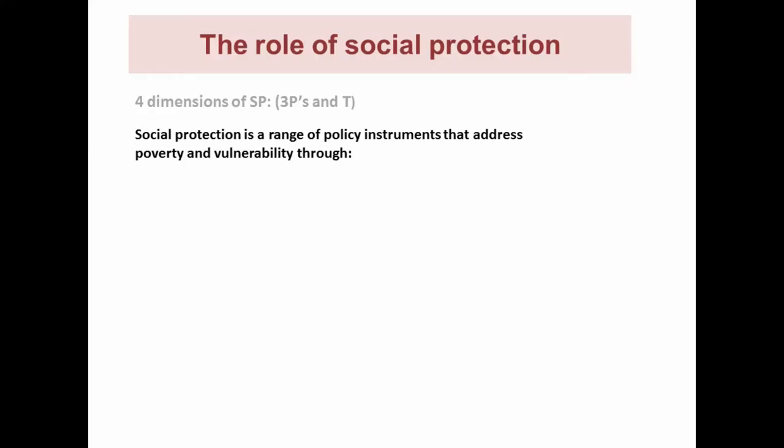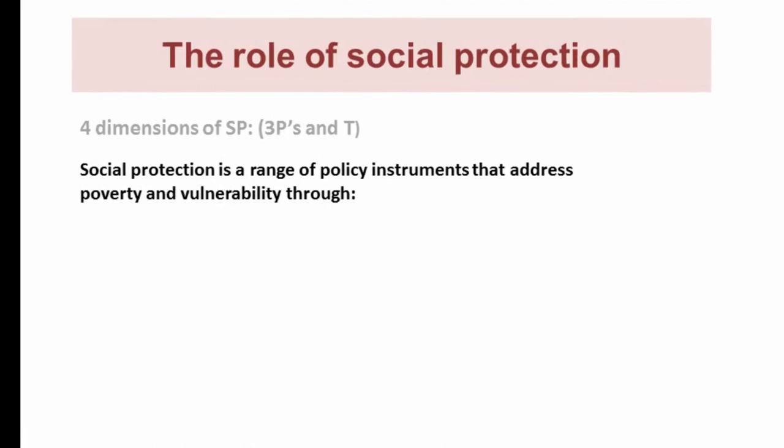Instead of putting up definitions, I need to describe what social protection is — certainly the way we follow it at IDS. I'm going to go through the main instruments and the objectives we're trying to achieve. I'll talk about four dimensions of social protection using a framework we call 'three Ps and a T.' Social protection is a range of policy instruments that address poverty and vulnerability, but you can do it in a number of ways.